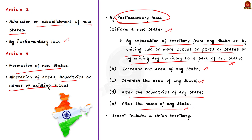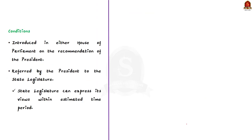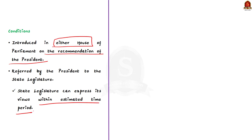When discussing Article 3, there are two important conditions. One: bills for the purposes mentioned in Article 3 can be introduced in either house of Parliament, but only on the recommendation of the President. Secondly, the bill that affects the area, boundaries, or name of any state should be referred by the President to the state legislature, and the state legislature can express its views within such period as the President may allow.